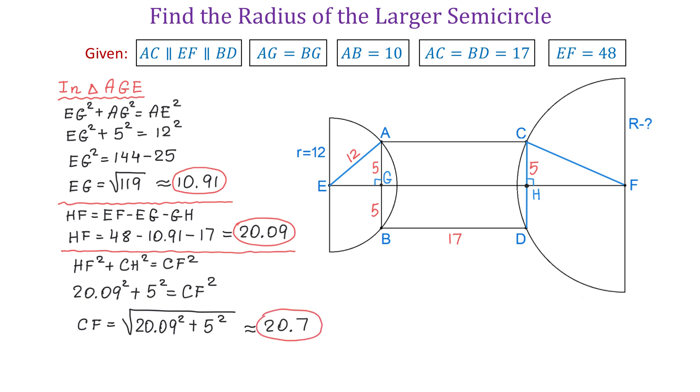So we can write now that the radius of the larger semicircle is approximately 20.7 units. I hope you liked this problem and thank you for watching.